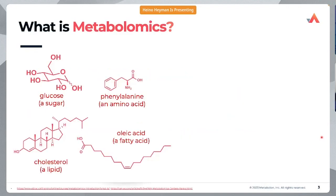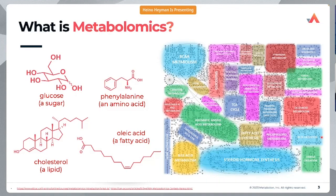So, what is metabolomics? Many of us go for annual physical checkups where we provide blood work, and physicians look at glucose levels, amino acid levels, fatty acid levels, and lipid levels. This gives an idea of our health status at that time, but it is a very focused approach — looking at only a reduced set of metabolites, comparing against a healthy range, and being very targeted.